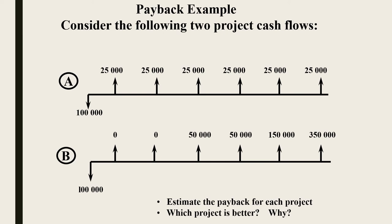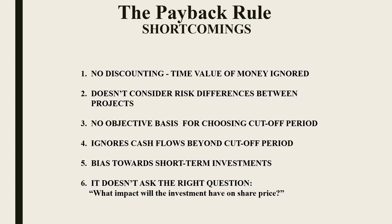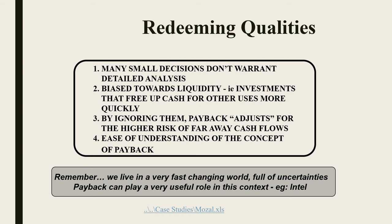We sometimes adjust this and do what we call discounted payback, where we deal with the time value of money and put the present values in. Still, it has the limitation that it tends to ignore the fish. There are some shortcomings and some redeeming qualities — essentially it's a very simple methodology. But on the whole, we're going to stick to NPV.